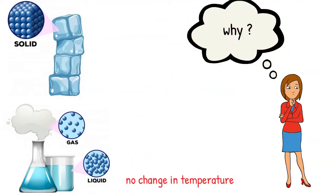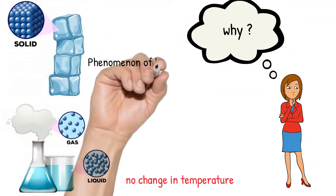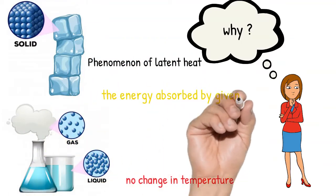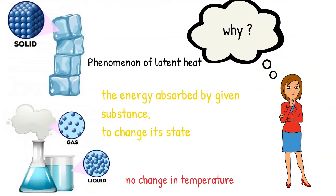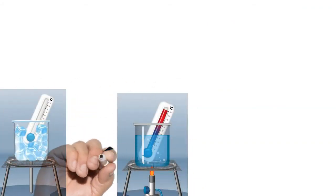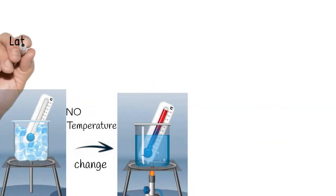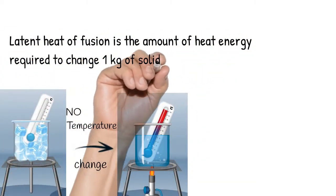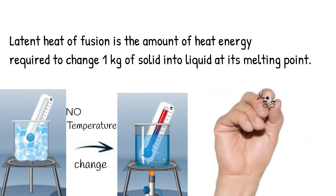This happens because of the phenomenon of latent heat. Latent heat is the energy absorbed by a given substance to change its state. Latent heat of fusion is the amount of heat energy required to change 1 kg of solid into liquid at its melting point.